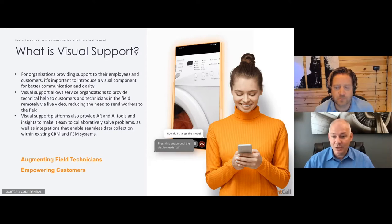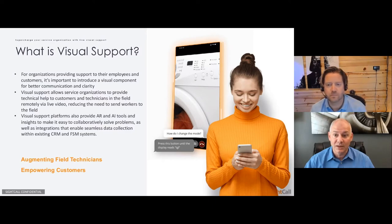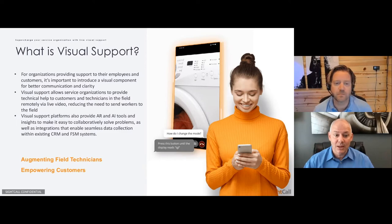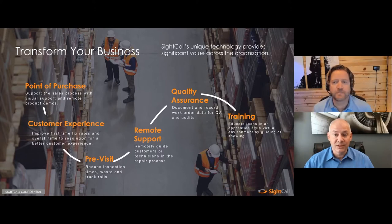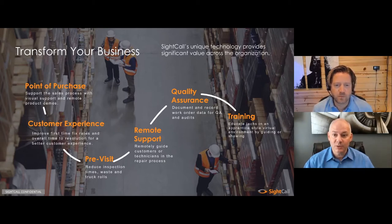We see applications for visual support both in a customer service type of role, providing direct customer support, as well as supporting field technicians in a field service role. But it can be used in a variety of different areas throughout the business. We've seen visual support used at the point of purchase through facilitating that pre-purchase experience — not only providing product tours, but also maybe doing site assessments before equipment is deployed or installed somewhere.